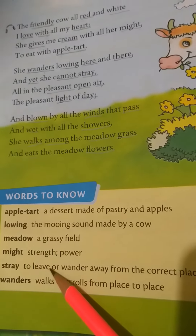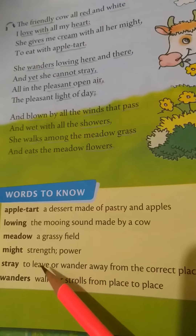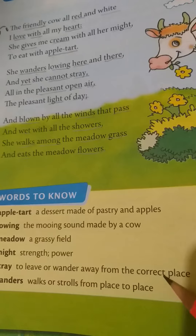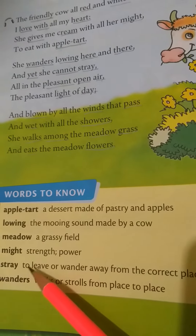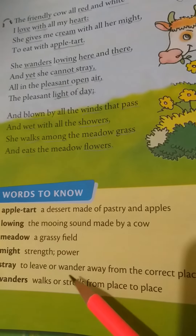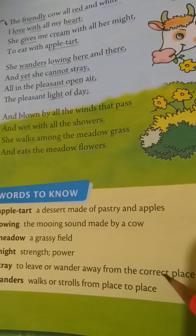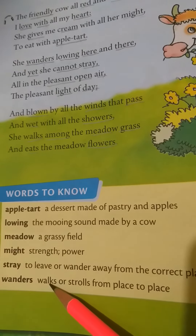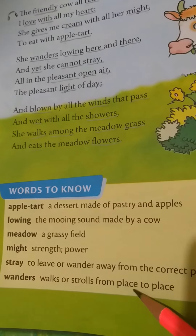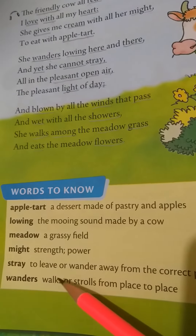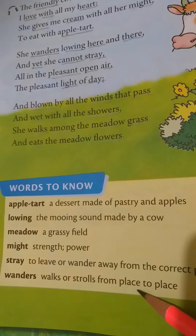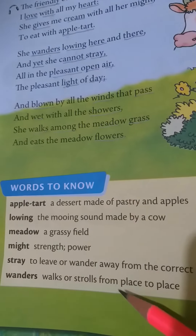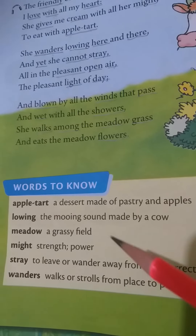Stray — to live or wander away from the correct place. Wanders — walks or strolls from place to place.